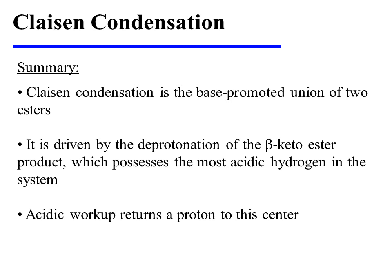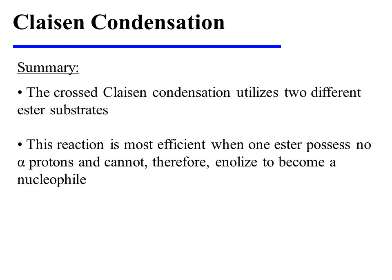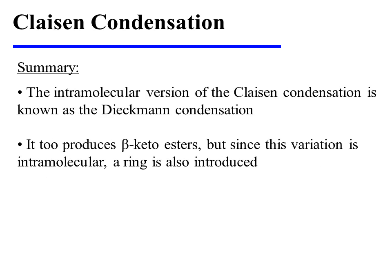In summary, the Claisen condensation is the base-promoted union of two esters. It is driven by the deprotonation of the beta-ketoester product, which possesses the most acidic hydrogen in the system; acidic workup returns a proton to this center. The crossed Claisen condensation utilizes two different ester substrates, and is most efficient when one ester possesses no alpha protons and cannot enolize to become a nucleophile. The intramolecular version of the Claisen condensation is known as the Dieckmann condensation, which also produces beta-ketoesters but additionally introduces a ring.